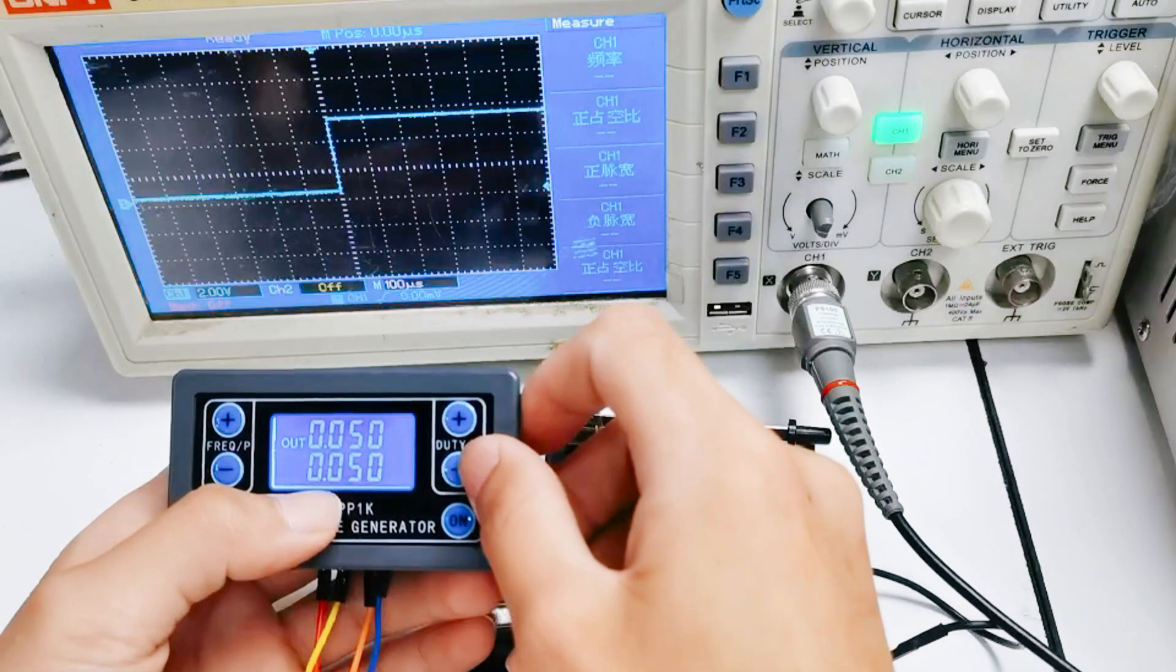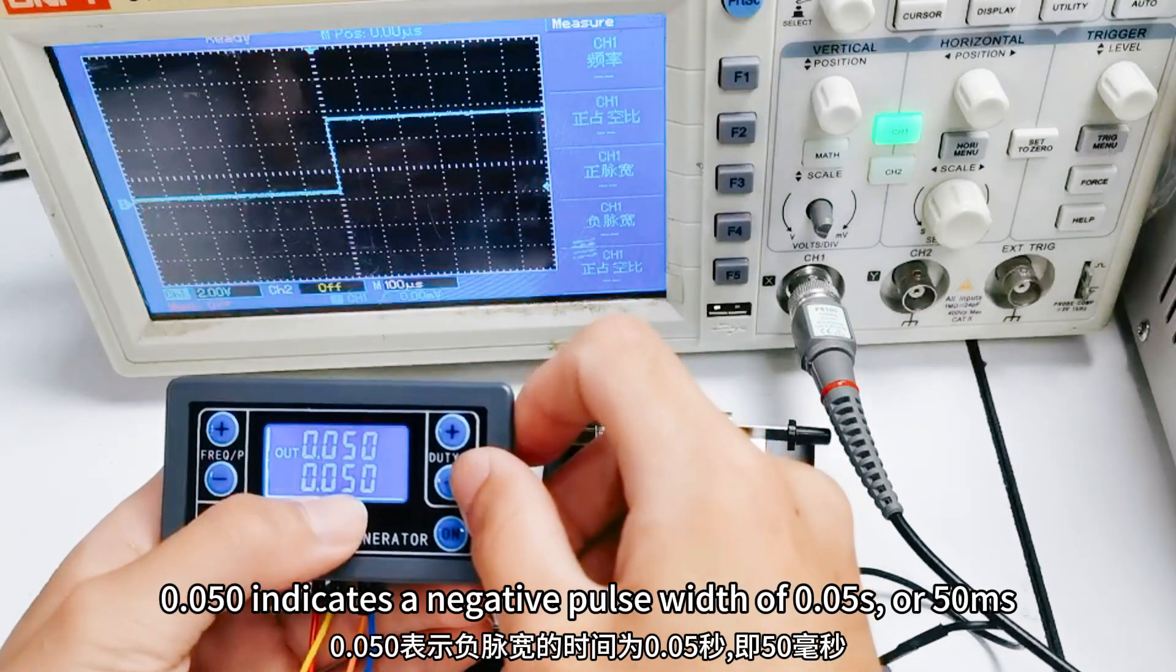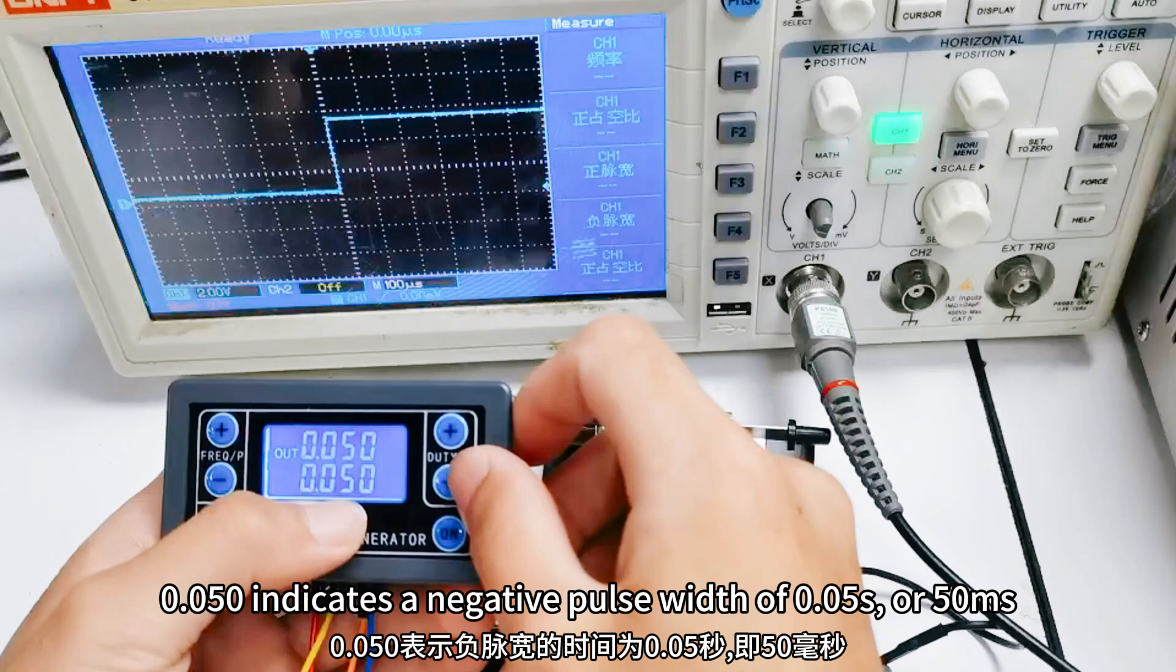Second line digit 0.05 indicates a negative pause width of 0.05 seconds, or 50 milliseconds.